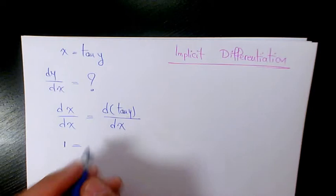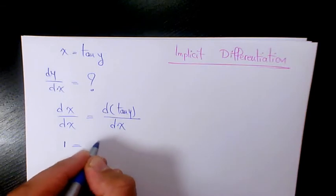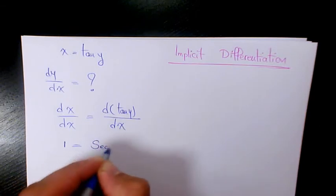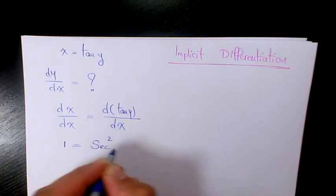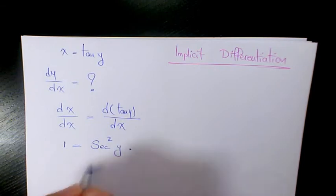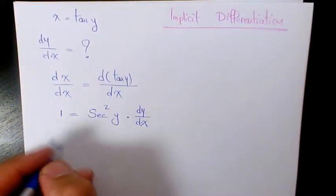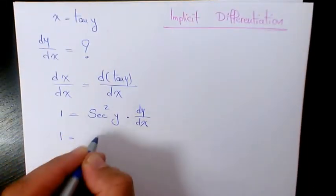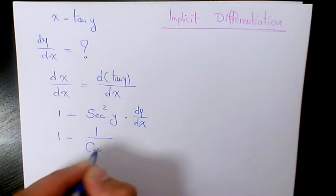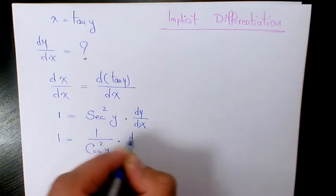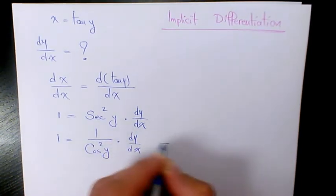The derivative of tan u with respect to x is going to be secant squared u times dy over dx. And then we can say secant squared is 1 over cosine squared y times dy over dx.